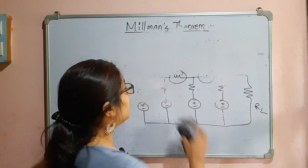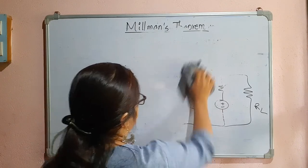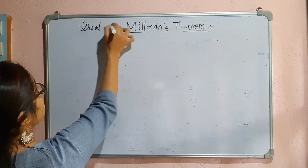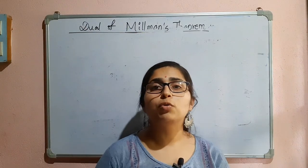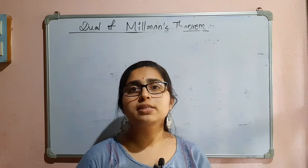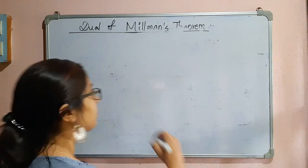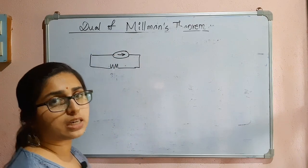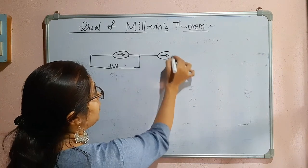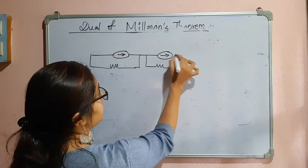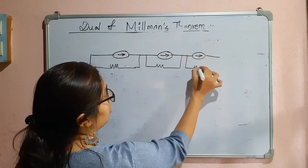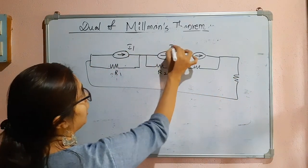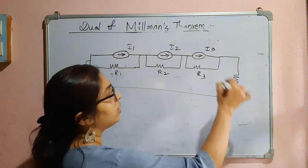We will now see the dual of Millman's theorem. Since Millman's theorem is applicable to voltage sources in parallel, the dual is applicable to current sources in series. In the dual, each current source has an internal resistance in parallel with it, and the sources are connected in series. For example: I1 with R1, I2 with R2, I3 with R3, and a load resistor RL all in series.